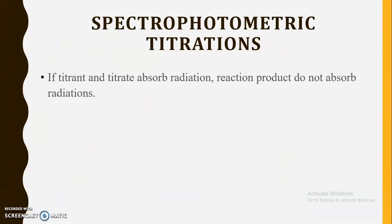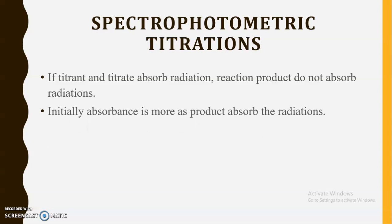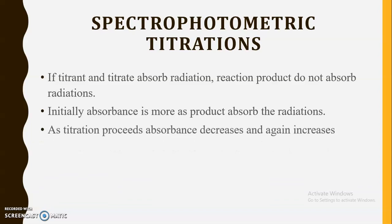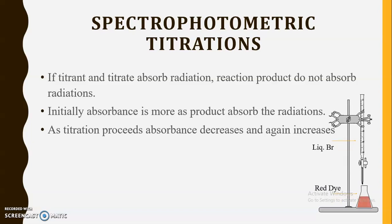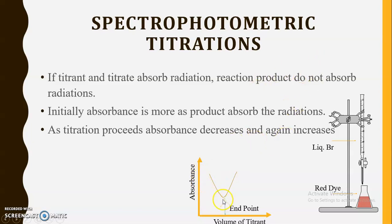The fourth type of titration is when both the titrant and titrate absorb the radiation but the reaction product does not. Initially, since the titrate absorbs radiation, absorbance is high. As titration proceeds, absorbance decreases because the product does not absorb. After the endpoint, the solution consists of excess titrant which also absorbs, so absorbance increases again. For example, titration between liquid bromine and red dye. Extrapolating the two linear portions gives the endpoint volume of titrant. These are the various spectrophotometric titrations used for determination of different concentrations.